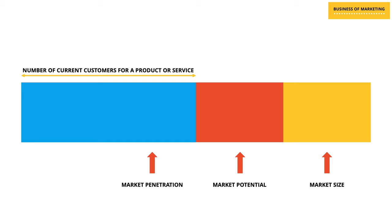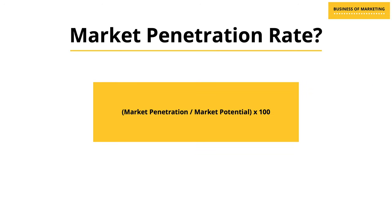Now let's come to market penetration. We know the size of the market, a part of which is market potential, and a part of that is market penetration. In our example, the number of current infant milk customers — which is 300,000 — is the market penetration. We have removed all the potential customers and what we are left with is the actual customers currently consuming the infant milk, which is 300,000. To calculate the market penetration rate, it would be a percentage of market potential: market penetration divided by market potential multiplied by 100, which gives 75%. So 300,000 divided by 400,000 multiplied by 100 equals 75%.